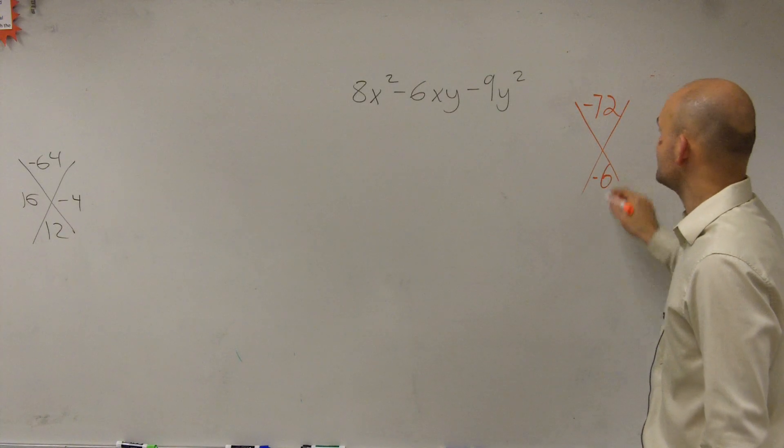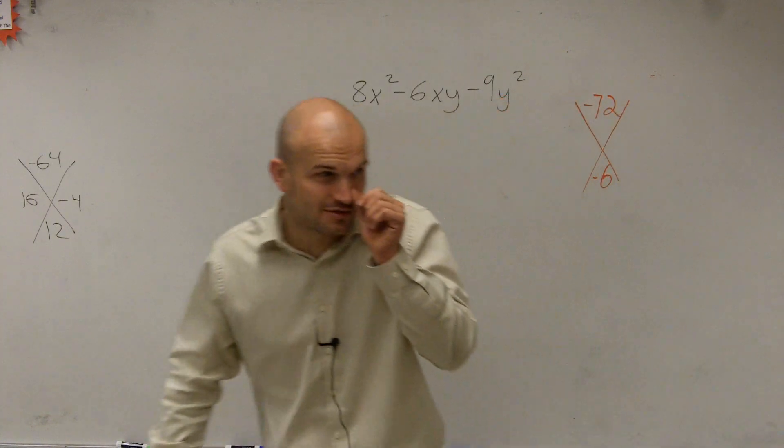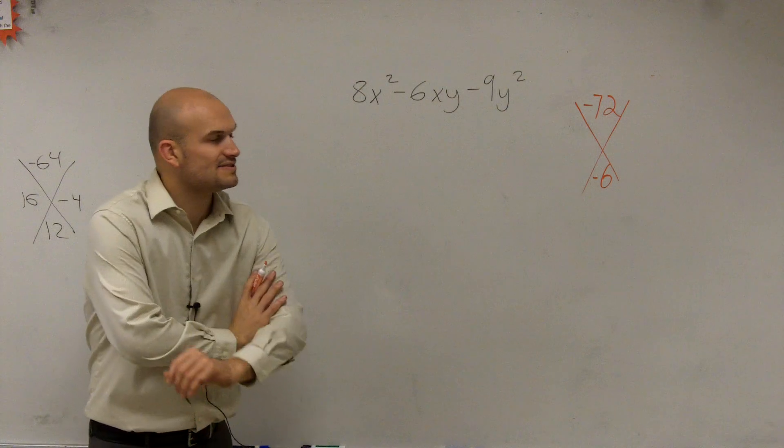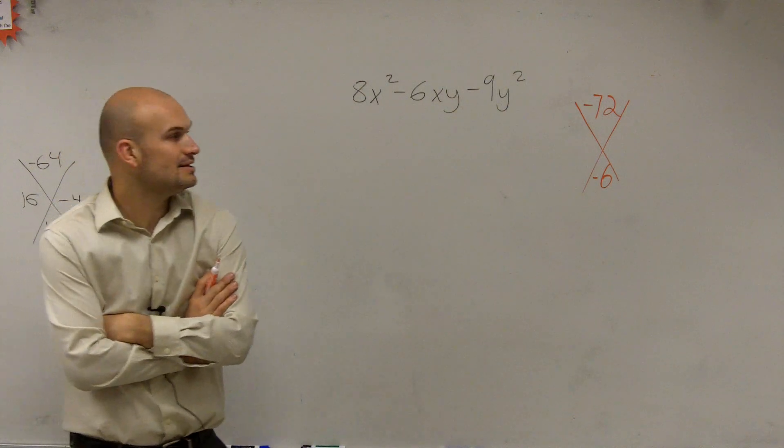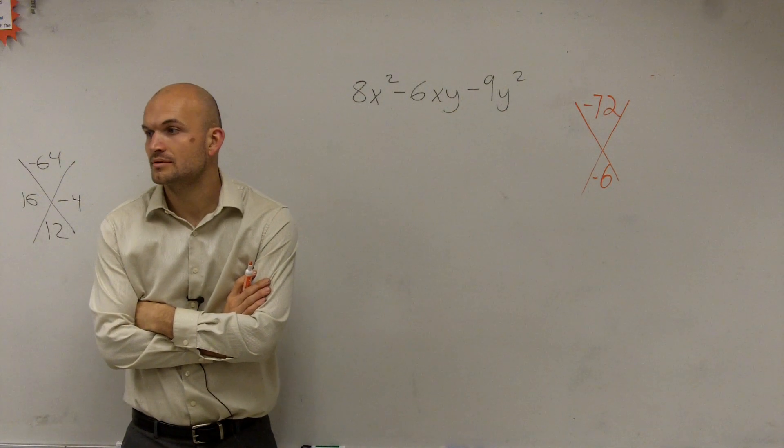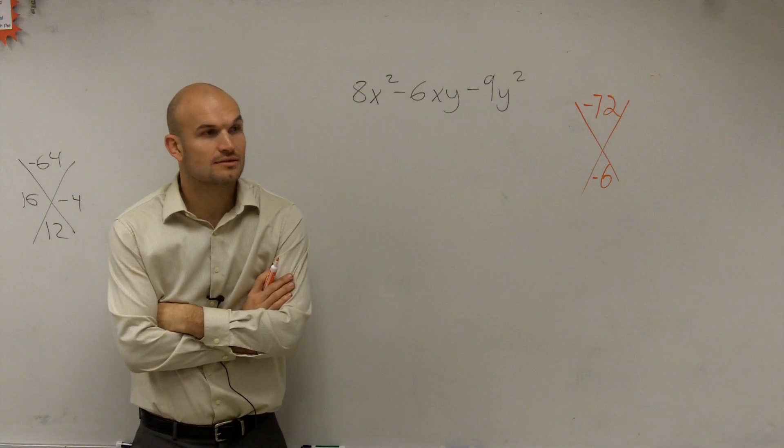and then add up to give us six. So is there any two numbers that multiply to give us negative 72, but then add to give us negative six? 12 and six. 12 and six. Very good.